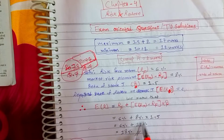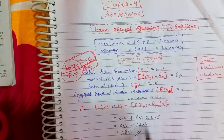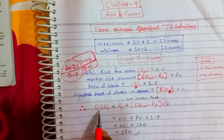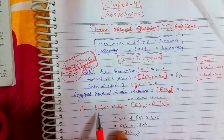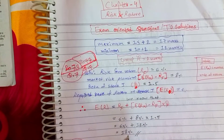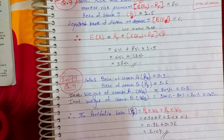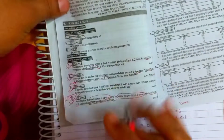The result is 18%. So the required rate of return on Stock J is 18%.